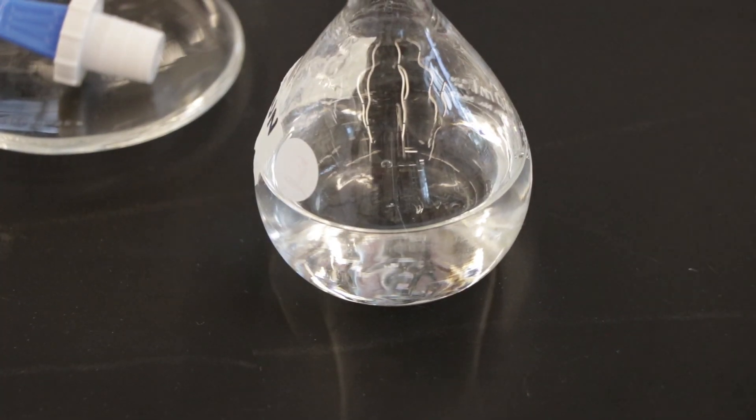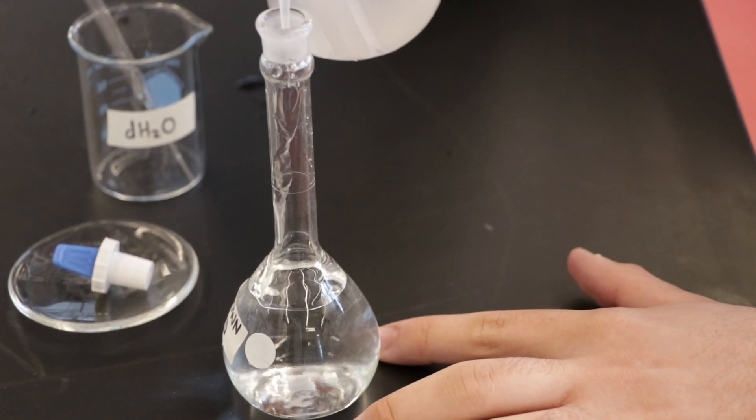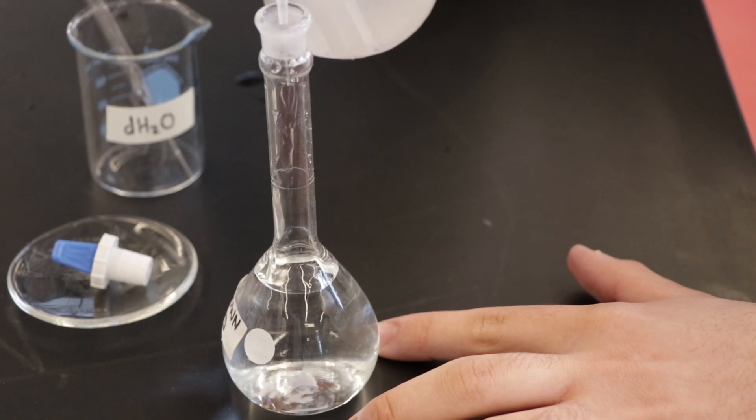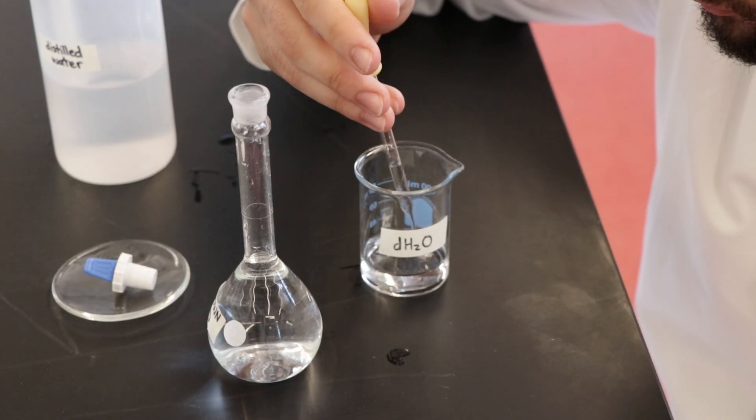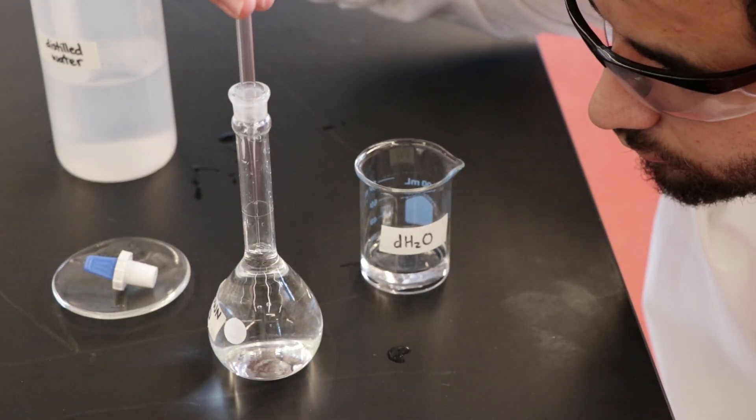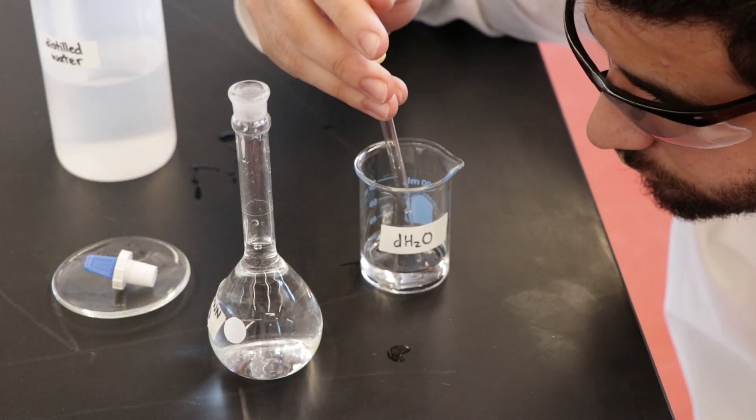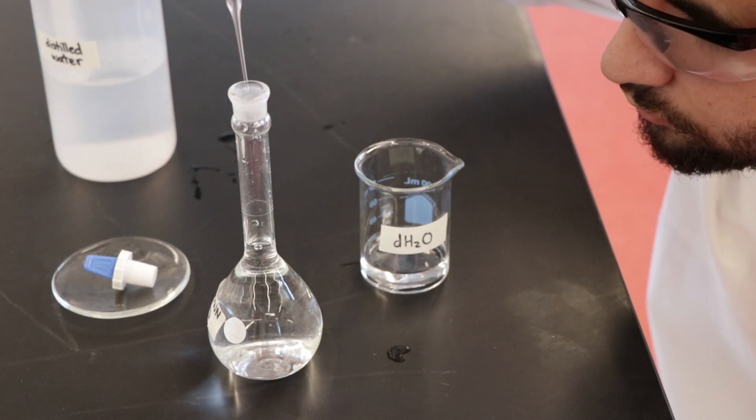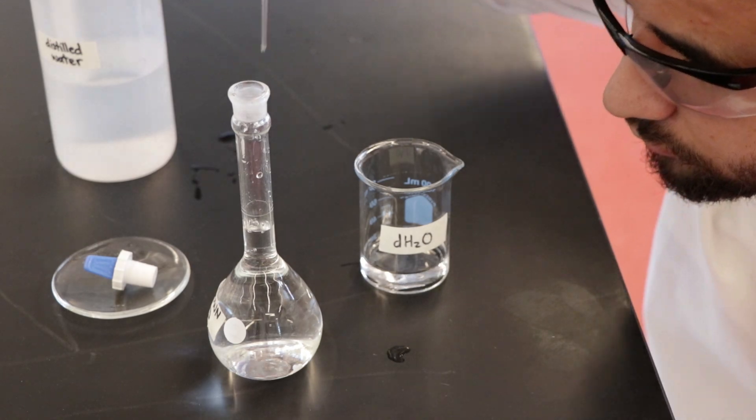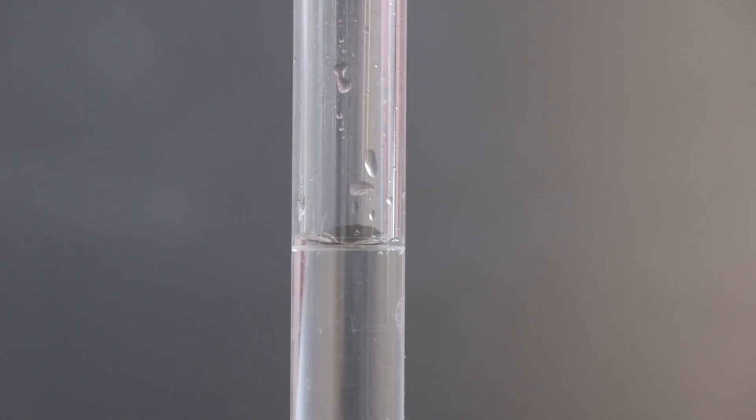Once all the solid is dissolved, fill the flask to the mark. You should use a wash bottle to add water until the bottom of the neck and then use a disposable pipette to carefully fill to the mark. Remember to be extra careful at this step. If you go over the mark, you will need to begin all over again. The bottom of the meniscus should sit on the mark.